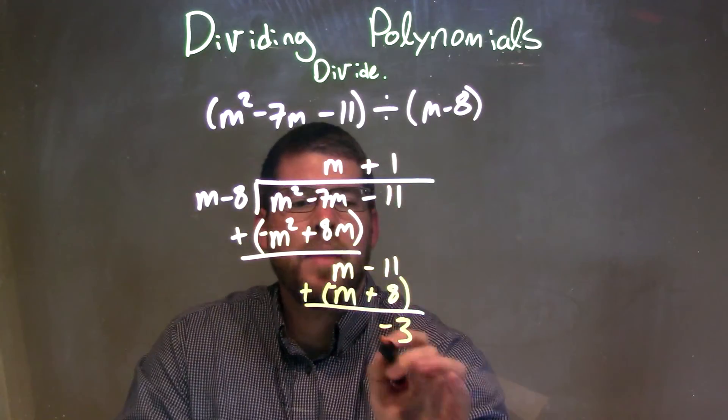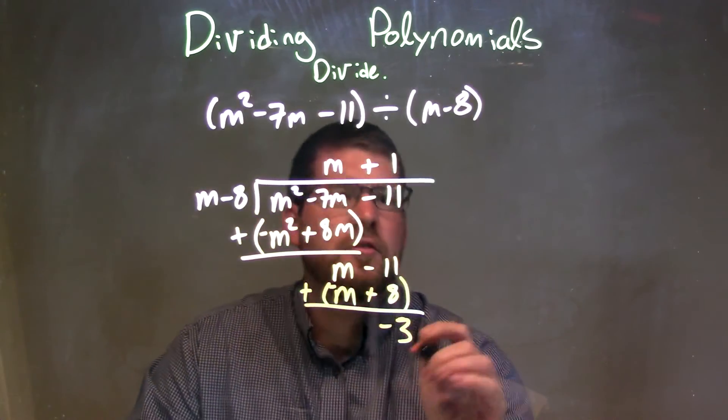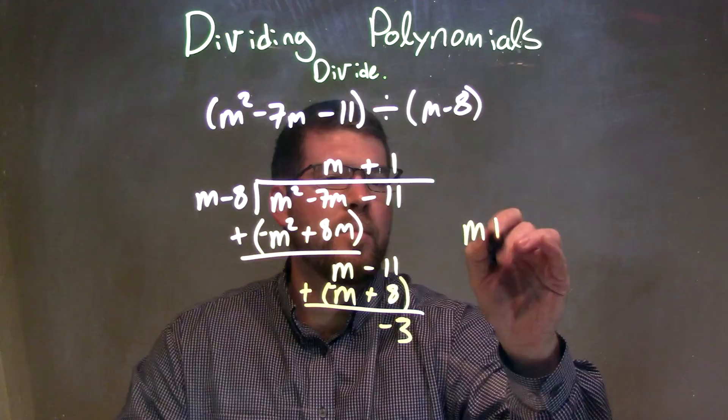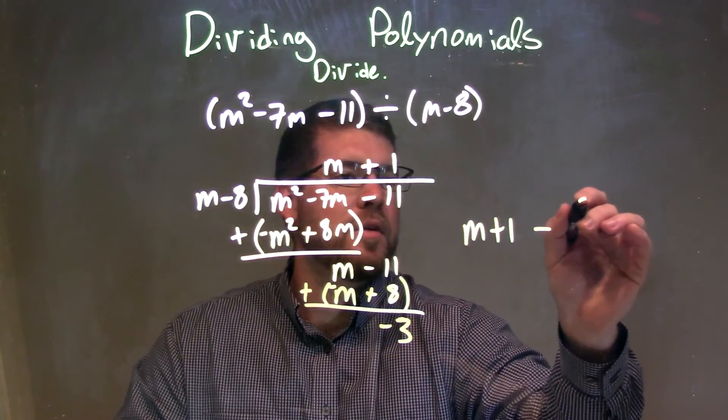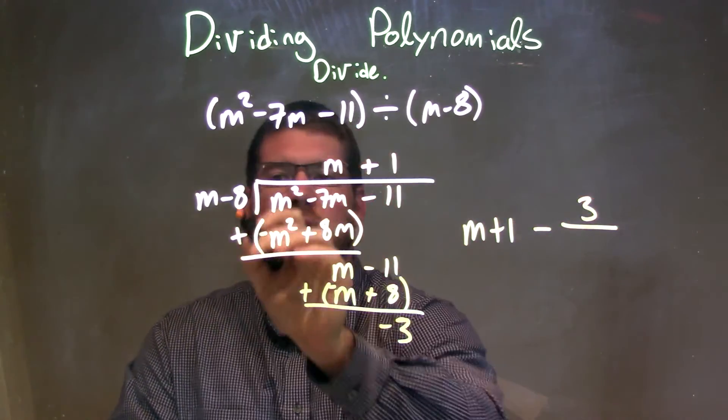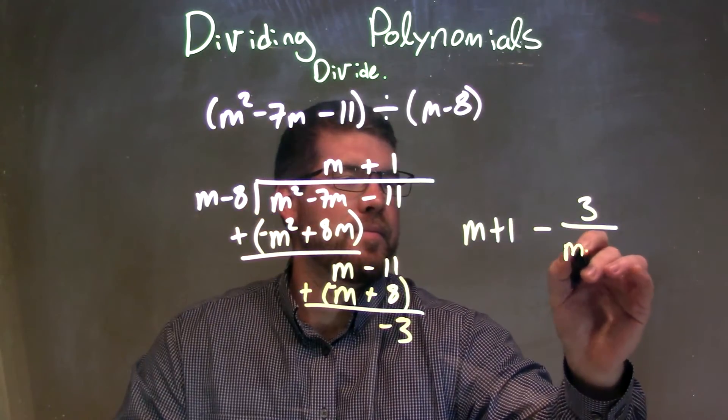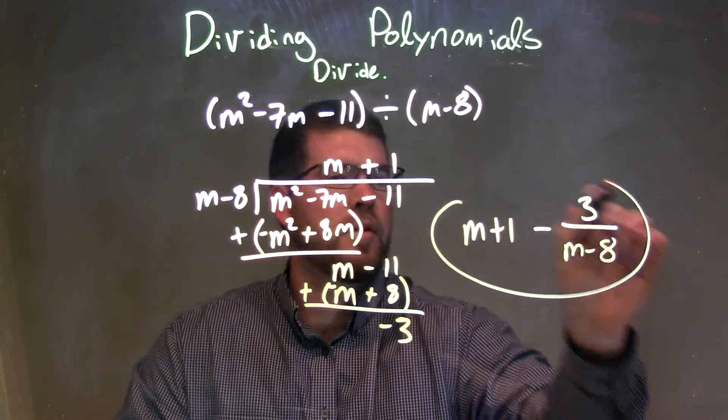Since we finished, that minus 3 is my remainder. My final answer is m plus 1 minus that remainder over m minus 8. There we have it, my final answer.